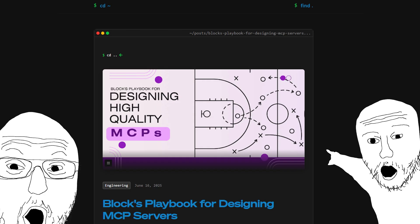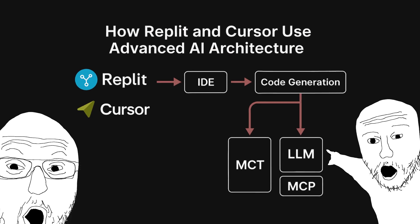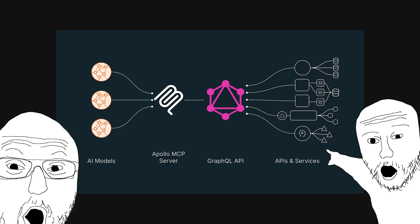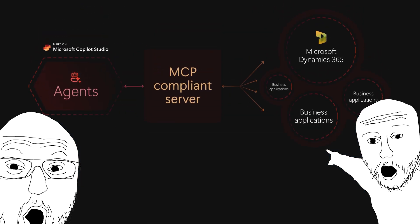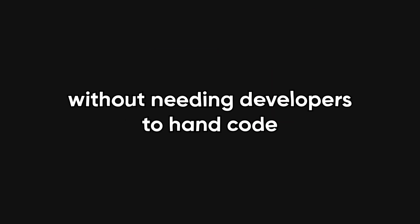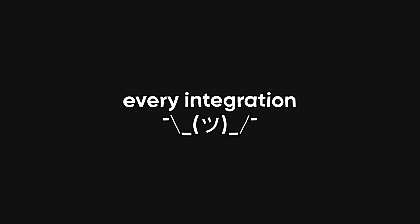And this isn't just theory. Block is using MCP to tie internal tools to agents. Replit integrated it so AI can read and write code across projects. Apollo uses it to pull structured data. Sourcegraph and Codium plugged it into dev workflows. Even Microsoft Copilot Studio supports it now, making AI useful without needing developers to hand-code every integration.